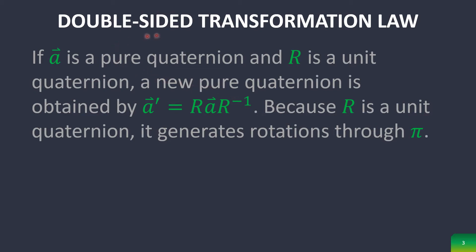There's also the double-sided transformation law, which is how you basically rotate a pure quaternion. It's a pure quaternion surrounded by a unit quaternion, and it gets rotated in segments of pi.